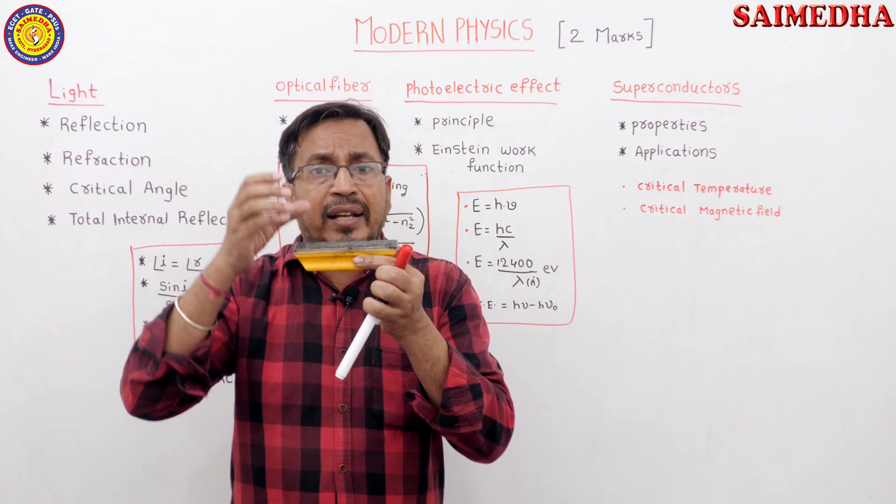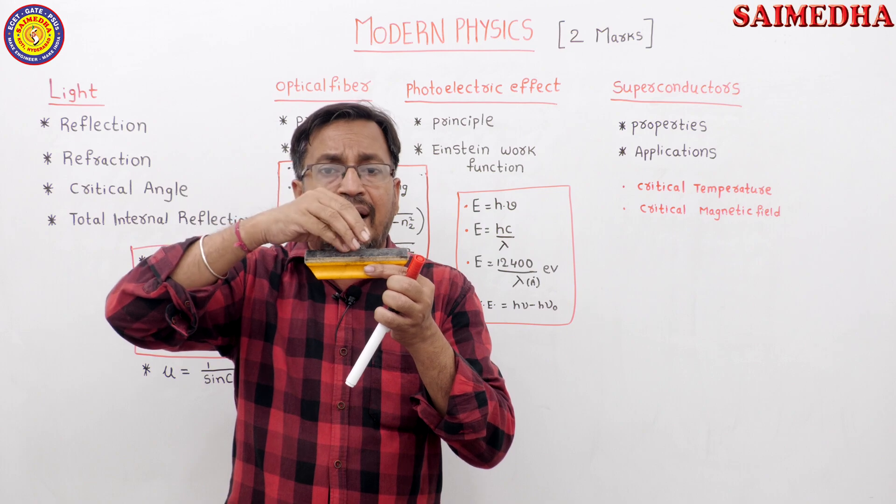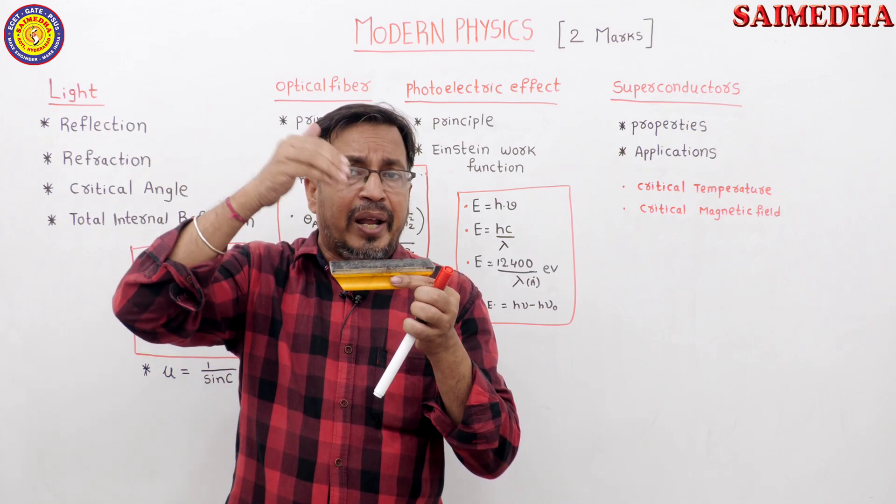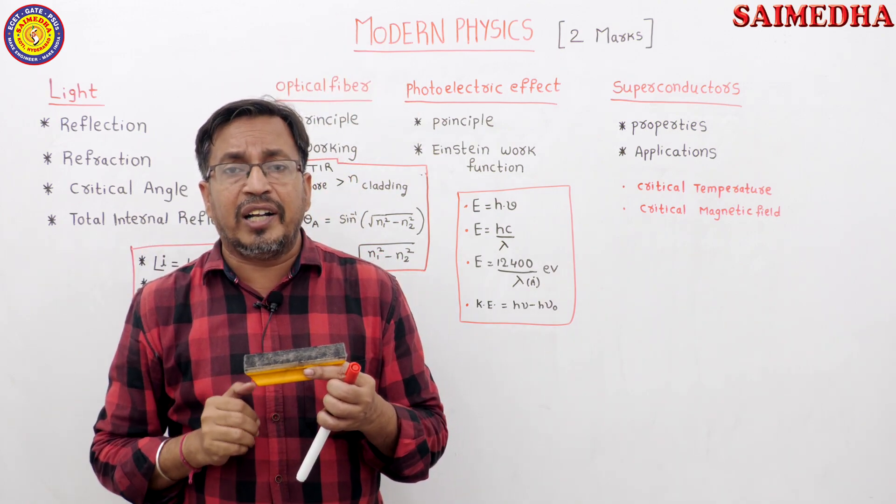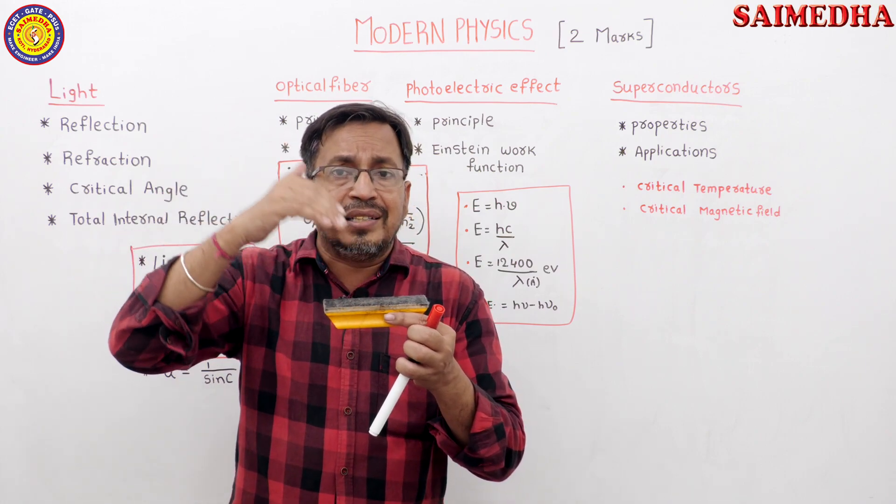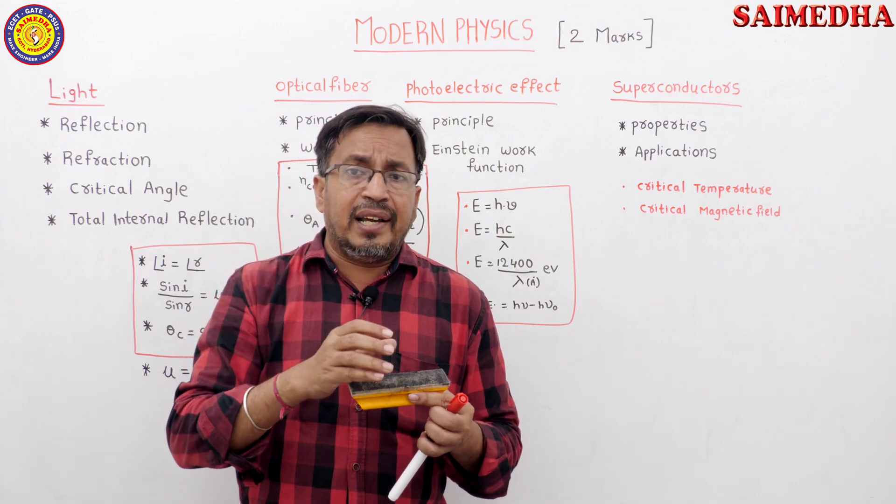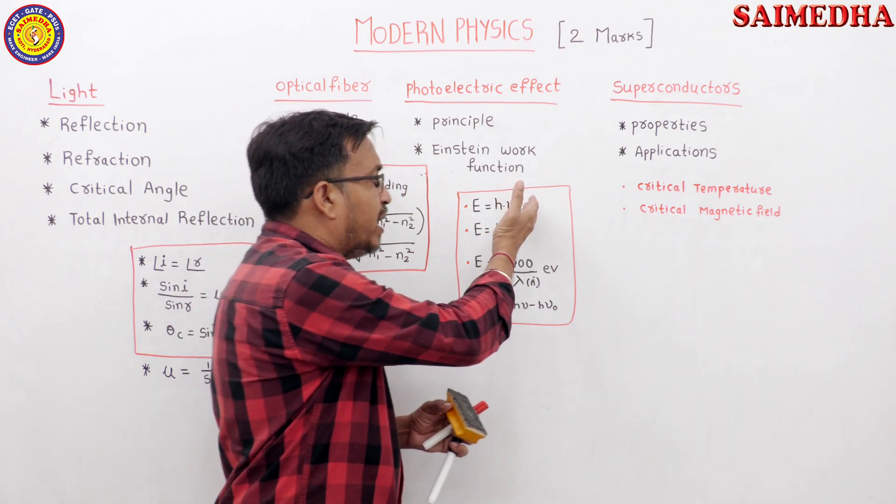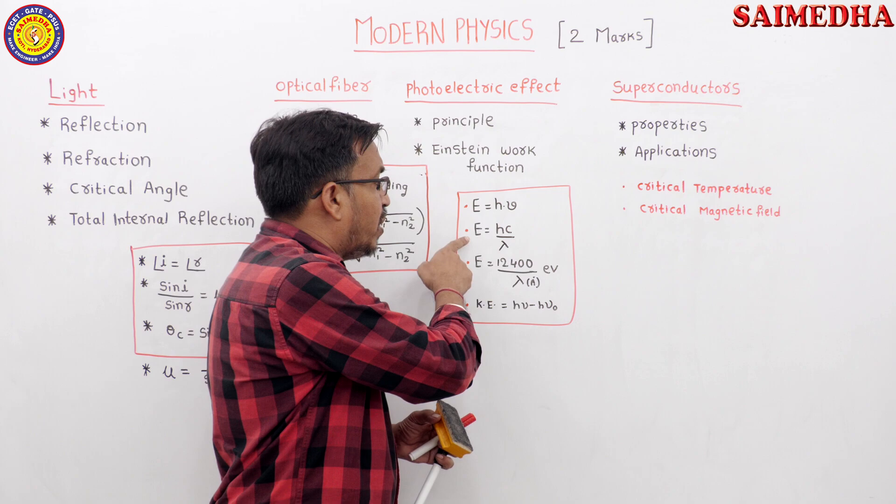In photoelectric effect, metal consists of electrons. Those electrons will be emitted if we apply incident wave on that metal. The emitted electrons obtain kinetic energy. Light energy is converted into electrical energy.